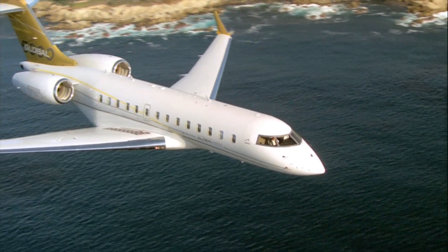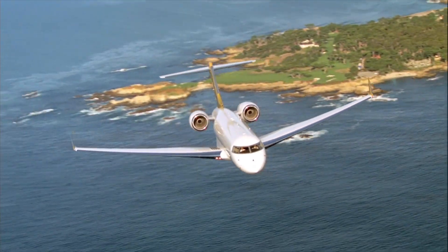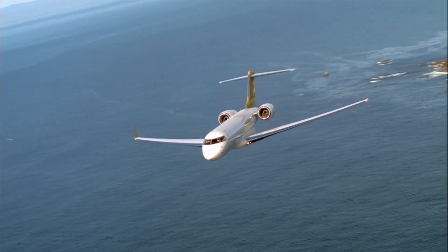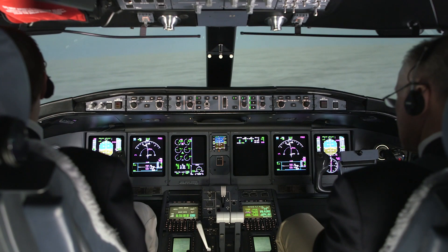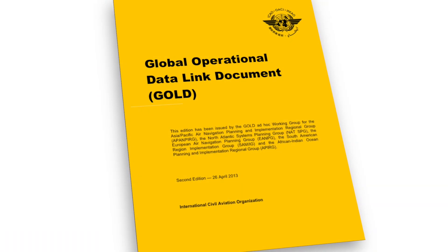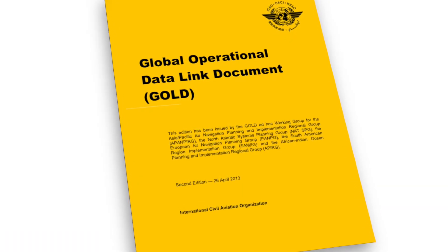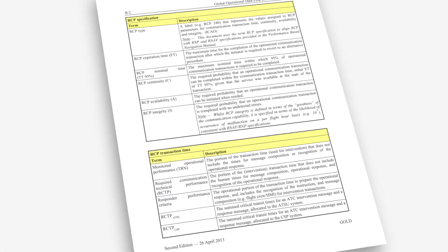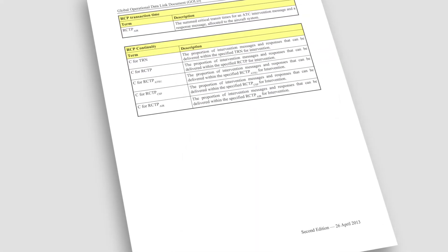Under normal circumstances, when entering a new ATSC airspace, the controlling ATSC will automatically transfer the aircraft to the next controlling ATSC, and the flight crew should not need to initiate another logon. When entering a new airspace, check the local requirements regarding HF or VHF voice check-in procedures, position reports, and the use of ATSC.